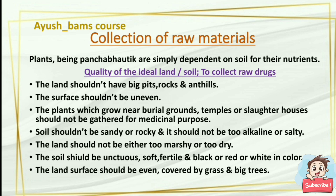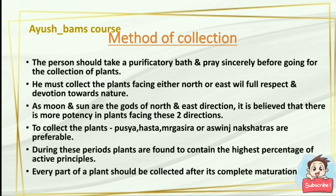Method of collection: the person should take a purificatory bath and pray sincerely before going for collection of plants. He must collect plants facing either north or east with full respect and devotion towards nature, as moon and sun are the gods of north and east directions. It is believed there is more potency in plants facing these two directions. To collect the plants, Pushya, Mrigashira, or Ashwini nakshatras are preferable, as during these periods plants are found to contain the highest percentage of active principles.